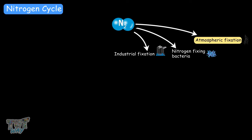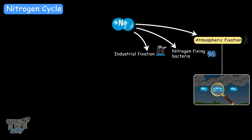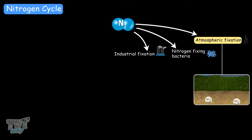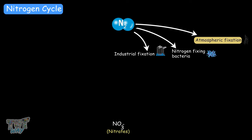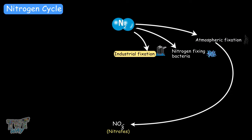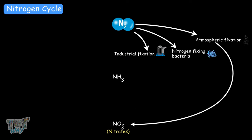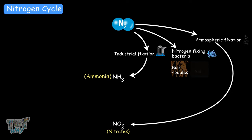In the case of atmospheric fixation, the bond between nitrogen atoms is broken by lightning, resulting in the formation of oxides of nitrogen that combine with water to form nitrates — which are then usable by plants. In the case of industrial fixation, nitrogen and hydrogen are combined to form ammonia, which can be used as a direct fertilizer. The third way is through nitrogen-fixing bacteria: nitrogen-fixing bacteria in the root nodules of leguminous plants and nitrifying bacteria present in the soil.